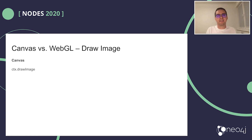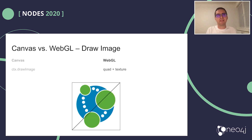Next, there is a method for drawing an image in Canvas. How about WebGL? This is simple — you can overlay the image on a quad. A quad is two triangles representing a rectangle.